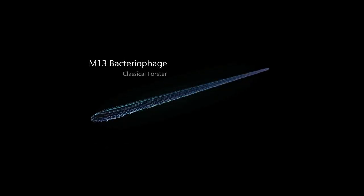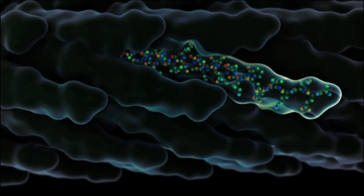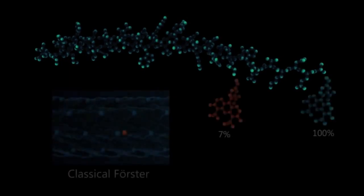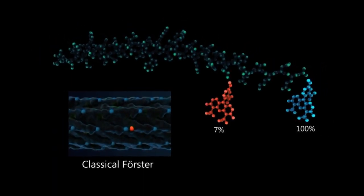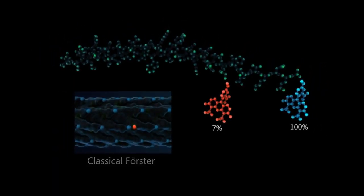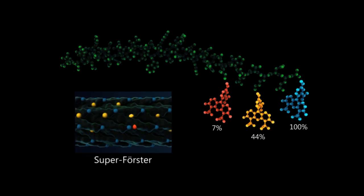One type is called a classical Förster bacteriophage, the second is a super-Förster or a quantum phage. We can go in and make modifications in the amino acid sequence such that these chromophores or these light absorbing molecules are at specific locations that are more optimal for energy transport along the length of the virus.